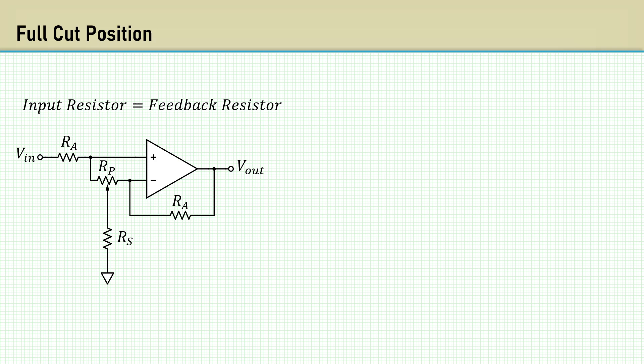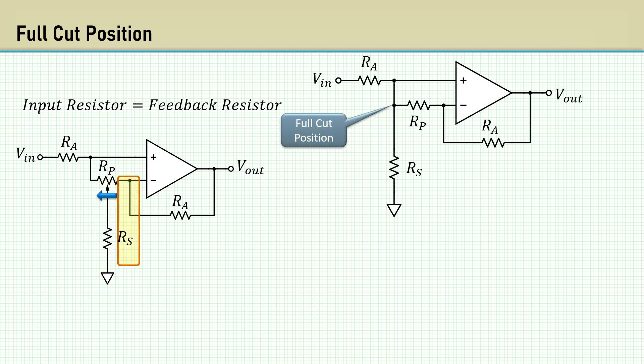Let's redraw the schematic in context to the extreme ends of the potentiometer, just to make it clear. The top of RS is now directly connected to RA. To analyze it, we will use the V plus equals V minus method of abstraction that we used back in the op-amp abstraction video.